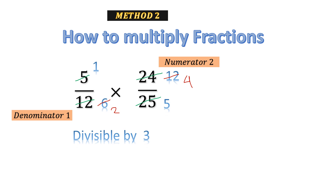Now our new numerator 2 is 4 and our new denominator 1 is 2. 2 and 4 can be cancelled again by 2: 2 times 1 is 2 and 2 times 2 is 4. Now, is there any other common factor between any numerator and any denominator? Our new numerators are 1 and 2; our new denominators are 1 and 5. Checking all pairs: 1 and 1, 1 and 5, 2 and 1, 2 and 5 — none have a common factor.